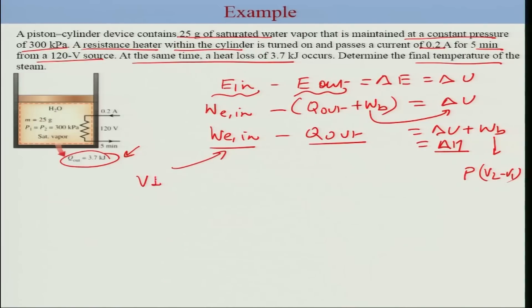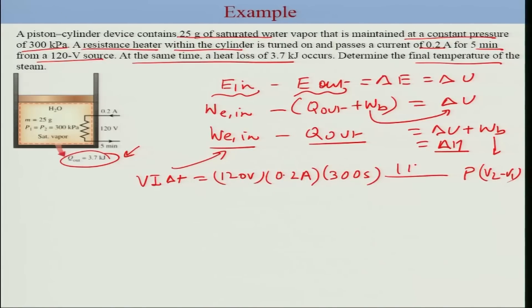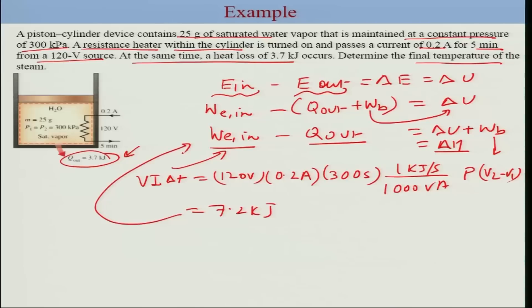W-electrical-in equals voltage times current times delta T: 120 volts times 0.2 amperes times 300 seconds. Using the conversion that 1 kJ/s equals 1000 volt-amperes, this gives 7.2 kilojoules. Plugging in, the expression becomes 7.2 kJ minus 3.7 kJ equals delta H.